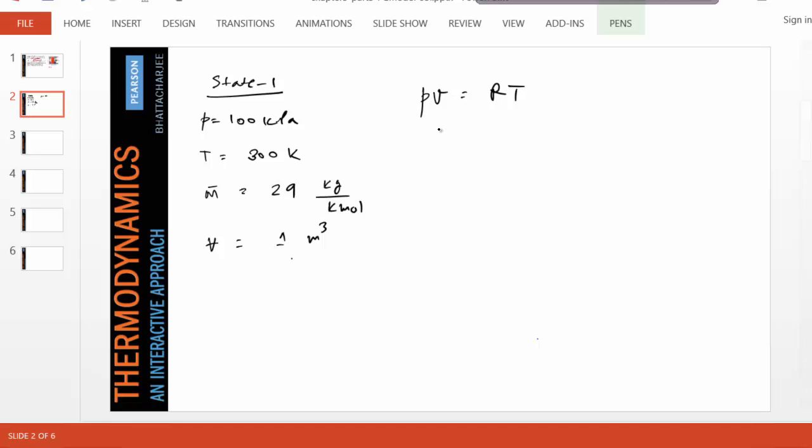If you recall, R is R bar over M bar. So therefore, the specific volume can be found as R bar over M bar T over P. What is R bar? That is the universal gas constant, 8.314 kilojoule per kilo mole kelvin. It is always the same number for any gas. And M bar is 29.